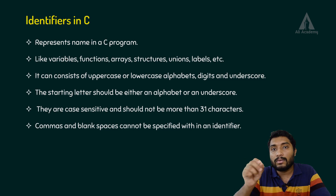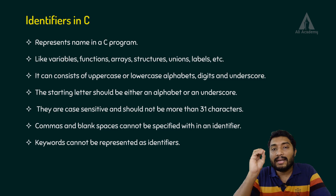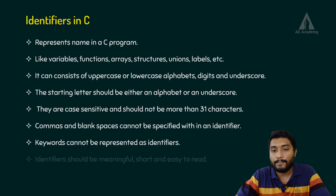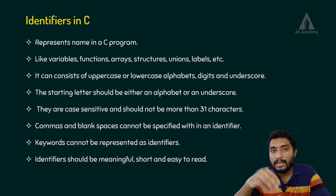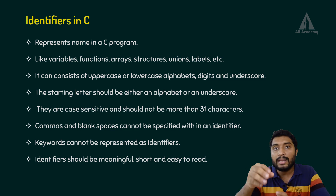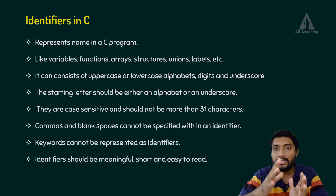But in between words like 'total' and 'count', we can place an underscore to separate them. The identifier name should be meaningful — for example, 'sum' for a sum value, 'count' for an integer value, and 'add_numbers' for a function that adds numbers. It should be short and easy to read.